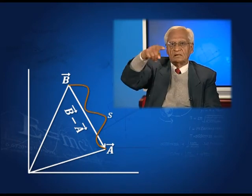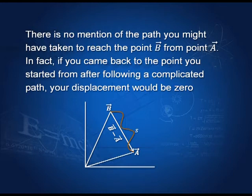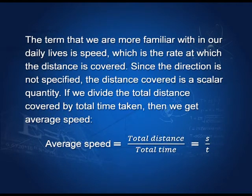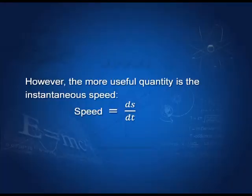In ordinary life, we do not use velocity very much — we are used to the term speed. What is speed? In the earlier graph, I showed you that the path for displacement does not matter. But if we measure the length along the path and denote it by small s, then the speed would be the total distance travelled divided by total time taken — that is, s by t. This s/t is the average speed. If you take small distance and small time, you will get instantaneous speed ds/dt, where small s denotes the distance travelled.